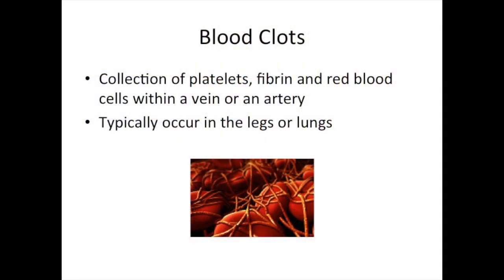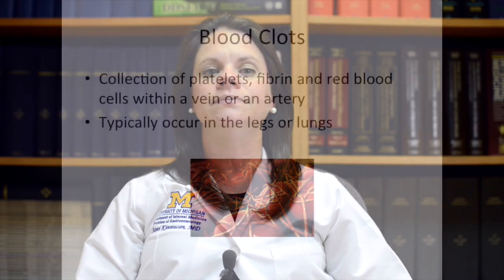Blood clots are a collection of fibrin, platelets, and red blood cells within a vein or an artery. Although blood clots can happen anywhere in the body, they typically occur more commonly in the veins of the legs or in the lungs.